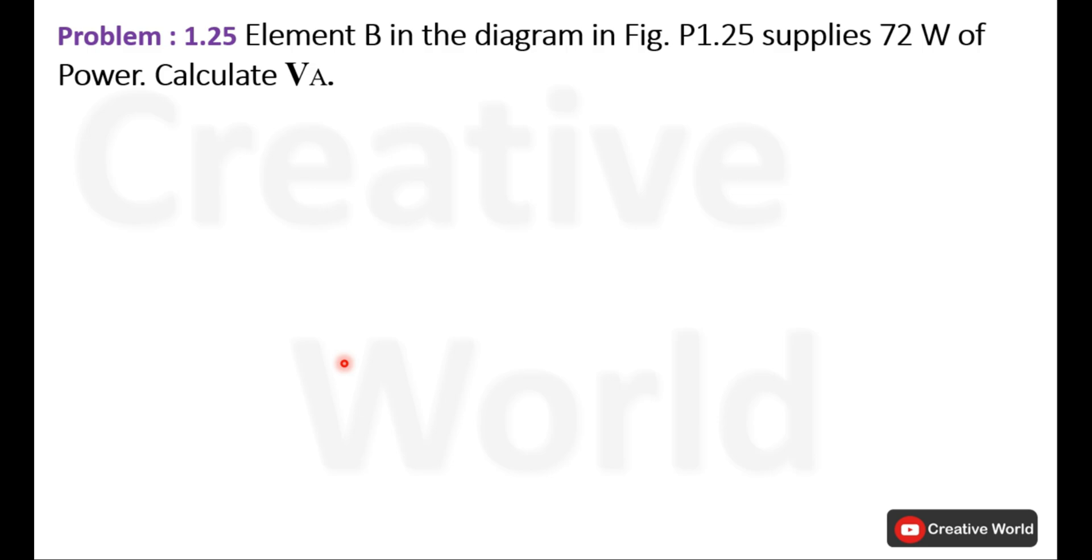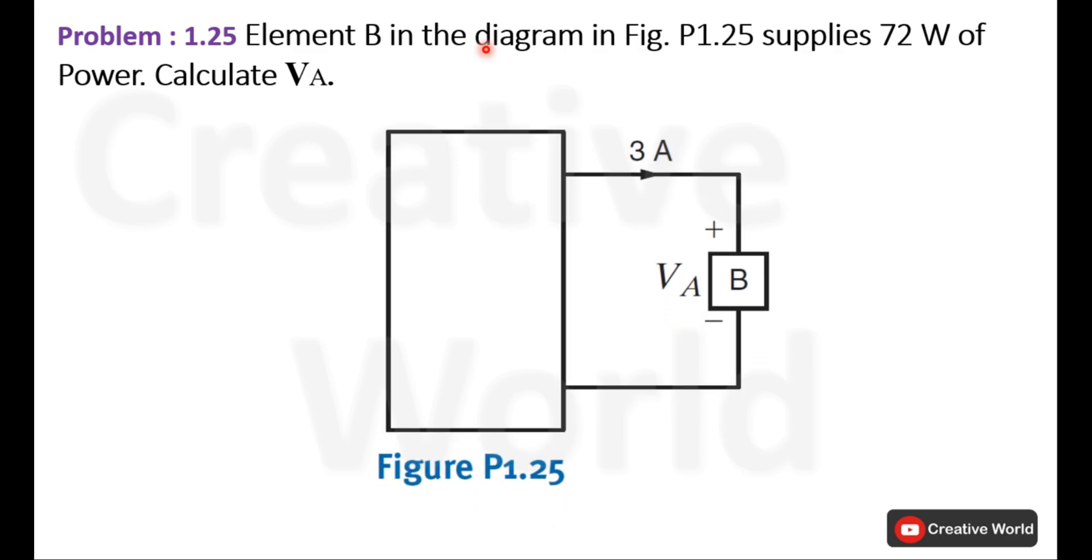Let's proceed towards the scenario. First, read the scenario: Element B in the diagram in Figure 1.25 supplies 72 watts of power. Calculate the voltage across this element, VA.